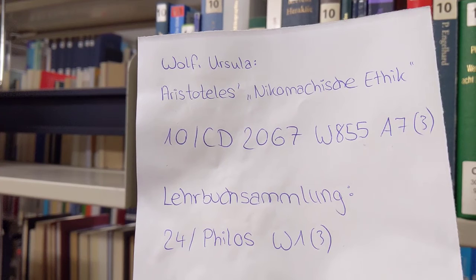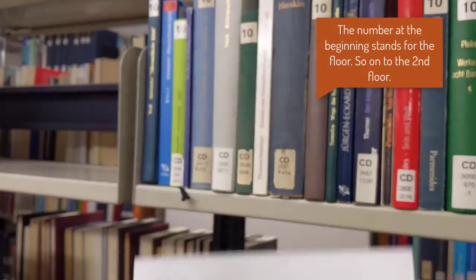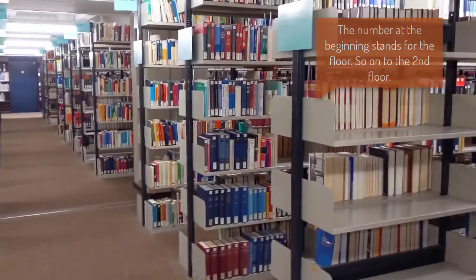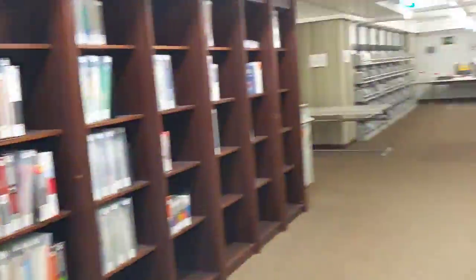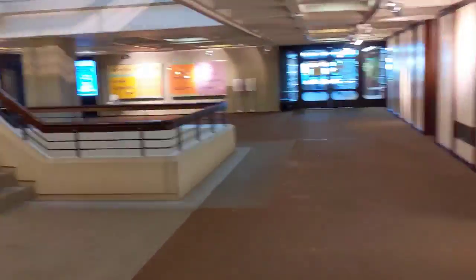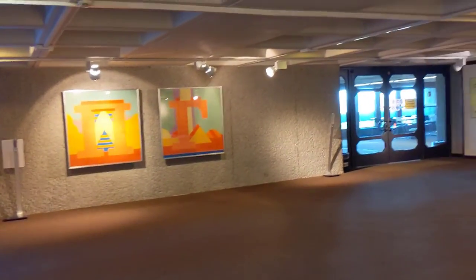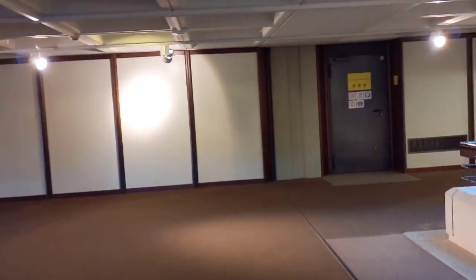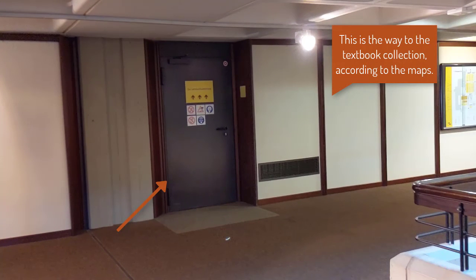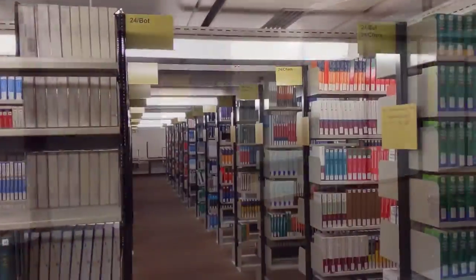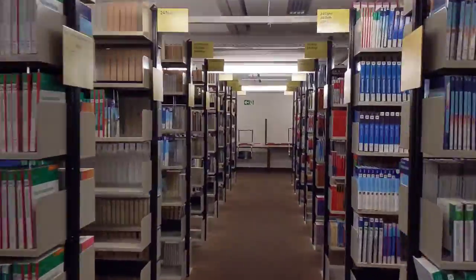Shelfmarks starting with 24 can be found in the textbook collection and are always for loan. Now you have to search for 24 PHILOS at the shelf — PHILOS stands for philosophy.